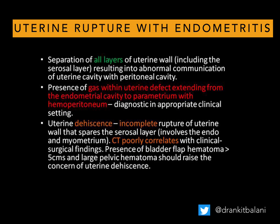So what is uterine rupture? It is nothing but separation of all layers of the uterine wall including the serosa layer, which is very important — because if the serosa is intact we call it uterine dehiscence. The presence of gas within the uterine defect extending from the endometrial cavity to the parametrium with hemoperitoneum, in the appropriate clinical setting such as a young female with severe pyrexia in the postpartum period, is suggestive of uterine rupture with endometritis.